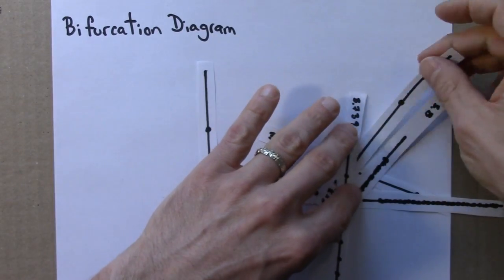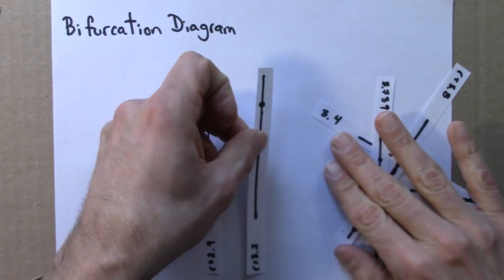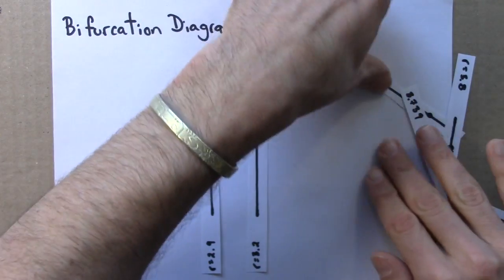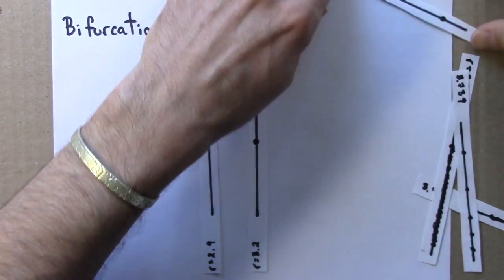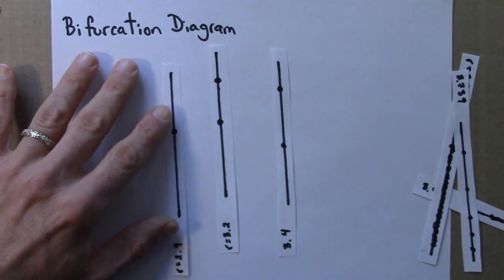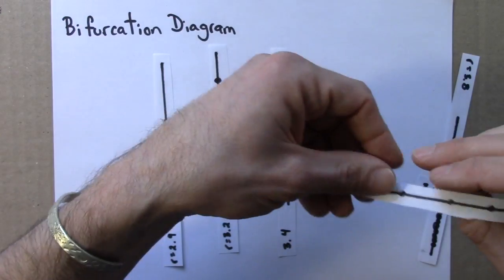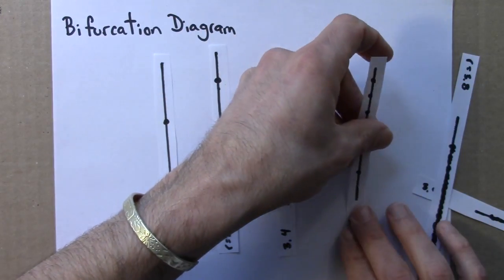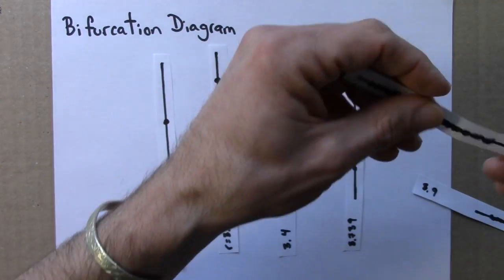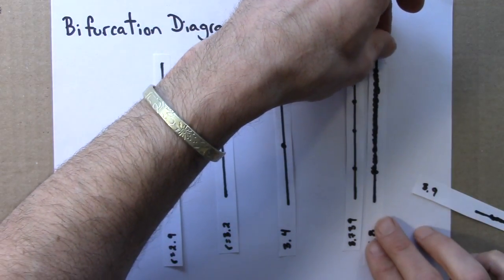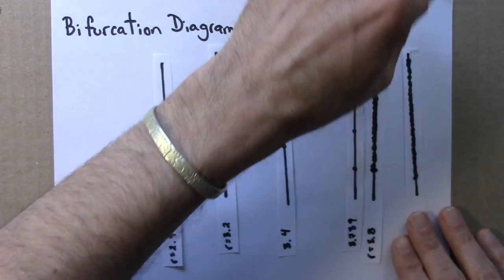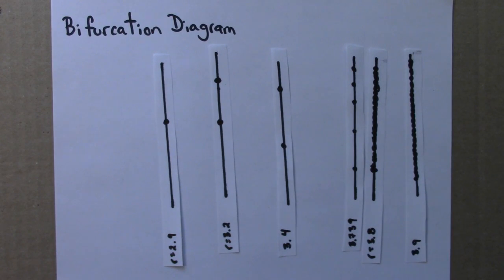So there's 2.9, that was period 1. Here's 3.2, that's a stable cycle of period 2. Here is 3.4, 3.739, 3.8, and 3.9.